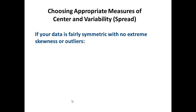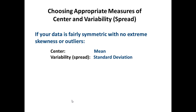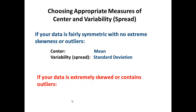Which measure of center and variability do we use when describing a set of quantitative data? That depends. If the data is fairly symmetric with no extreme skewness or outliers, we use the mean as our measure of center and the standard deviation as our measure of spread. However, if the data set is extremely skewed or contains outliers, both the mean and standard deviation would be highly affected, so we use the median as our measure of center and the interquartile range as our measure of spread.